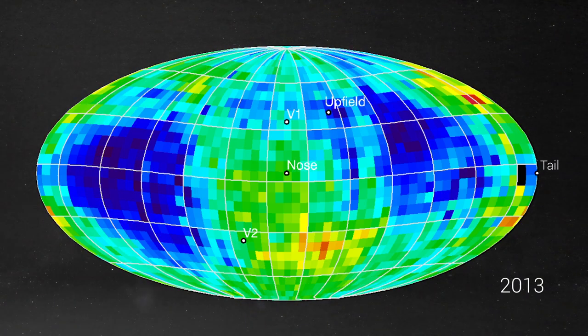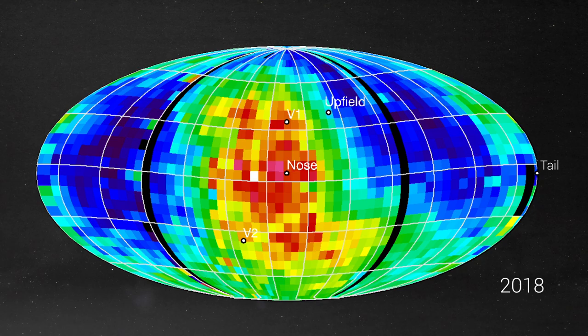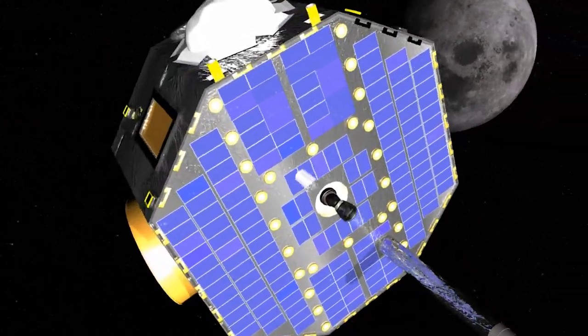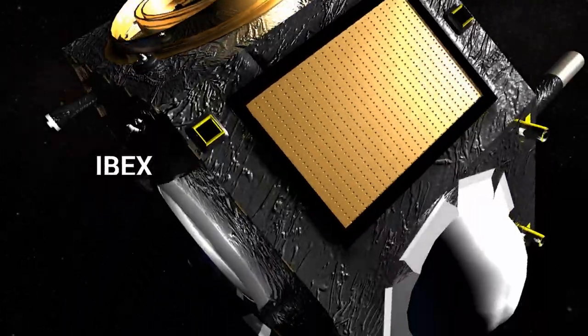To understand these maps, you need to know how we observe the edge of the solar system. Scientists use NASA's Interstellar Boundary Explorer, or IBEX.